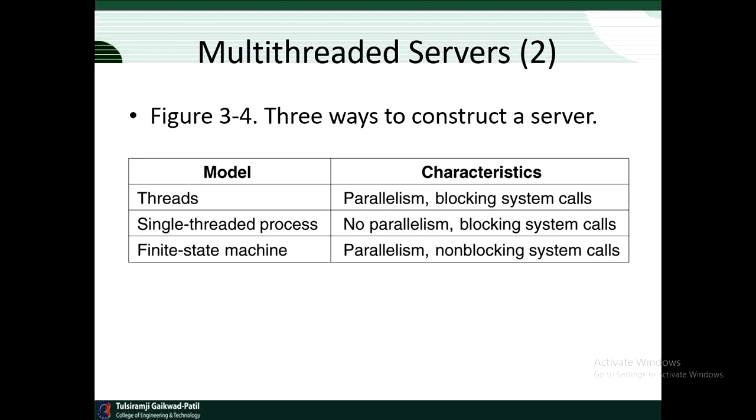In this diagram, there are three ways to construct a server model. The models are threads, single-threaded process, and finite-state machine. Their characteristics are also given. Threads have parallelism and blocking system calls. Single-threaded process has no parallelism and blocking system calls. Finite-state machine model has parallelism and non-blocking system calls. This is all about threads in distributed systems.